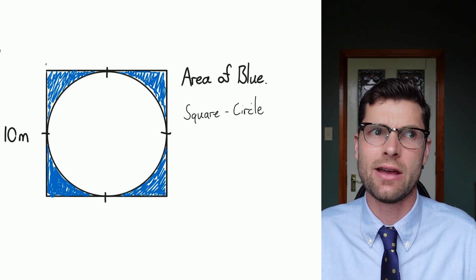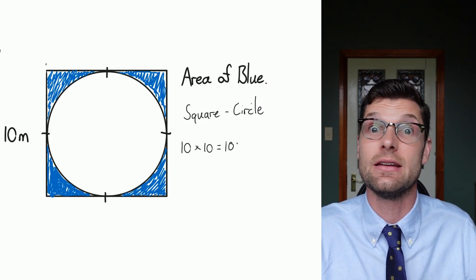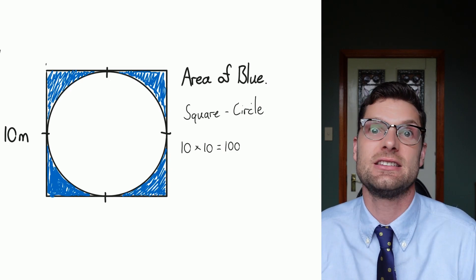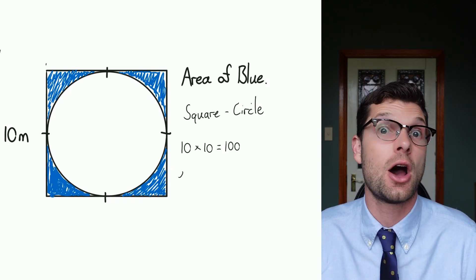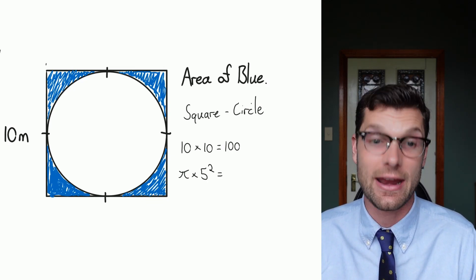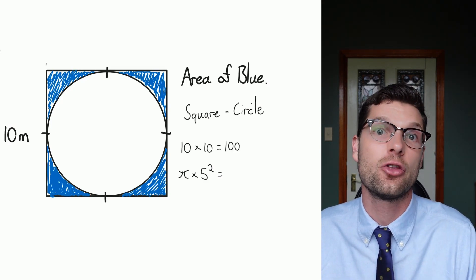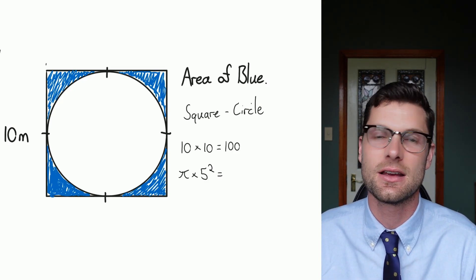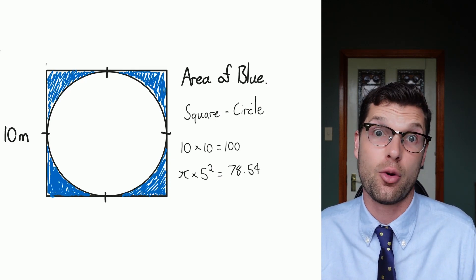So by working out the area of the square, 10 times 10, I get the answer of 100. That's that first bit done. And then I've got to minus the area of the circle that I took away. So that's just pi times 5 squared. Make sure you use 5 there because it is the radius. It's not the whole way across. That's 10 centimeters. The radius is half that distance.